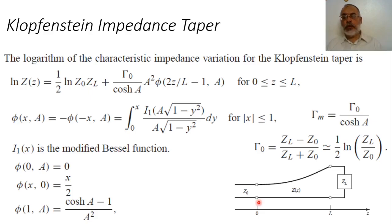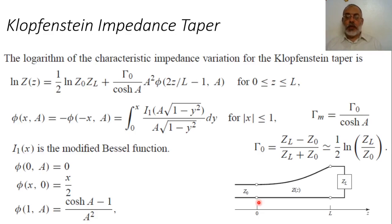On the other hand, for the triangular tapered section, the minimum length to obtain zero reflection coefficient is lambda — not lambda over 2 as in the case of the exponential tapered section. Furthermore, the reflection coefficient after a length greater than lambda is proportional to sinc-squared, not a sinc function.